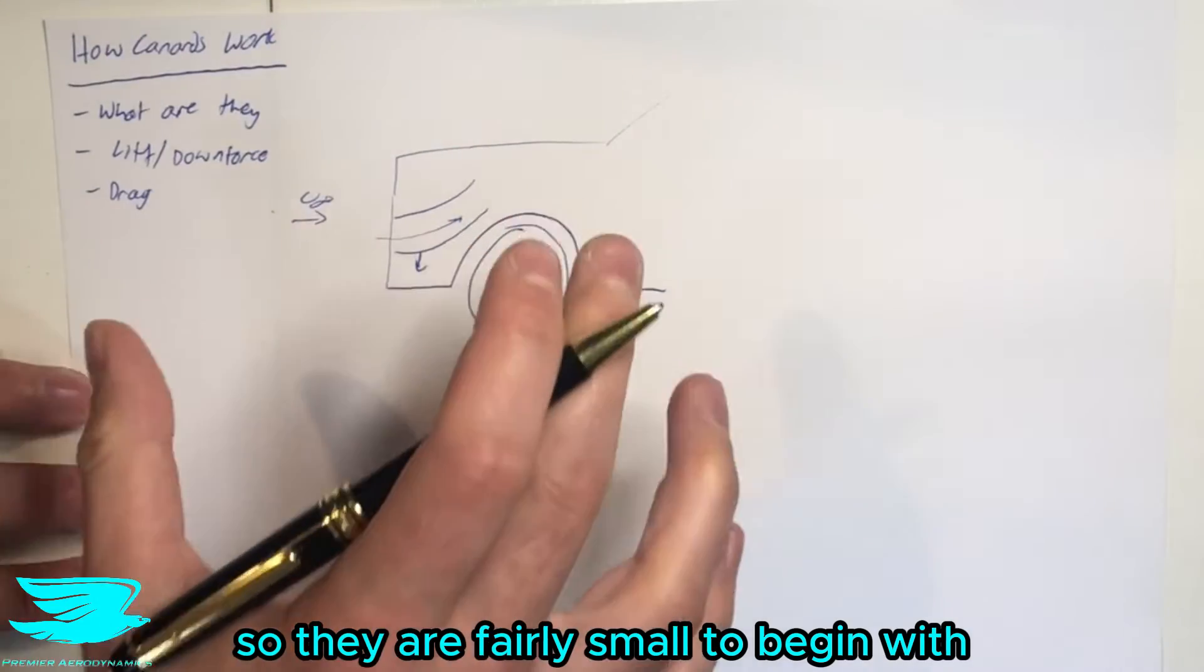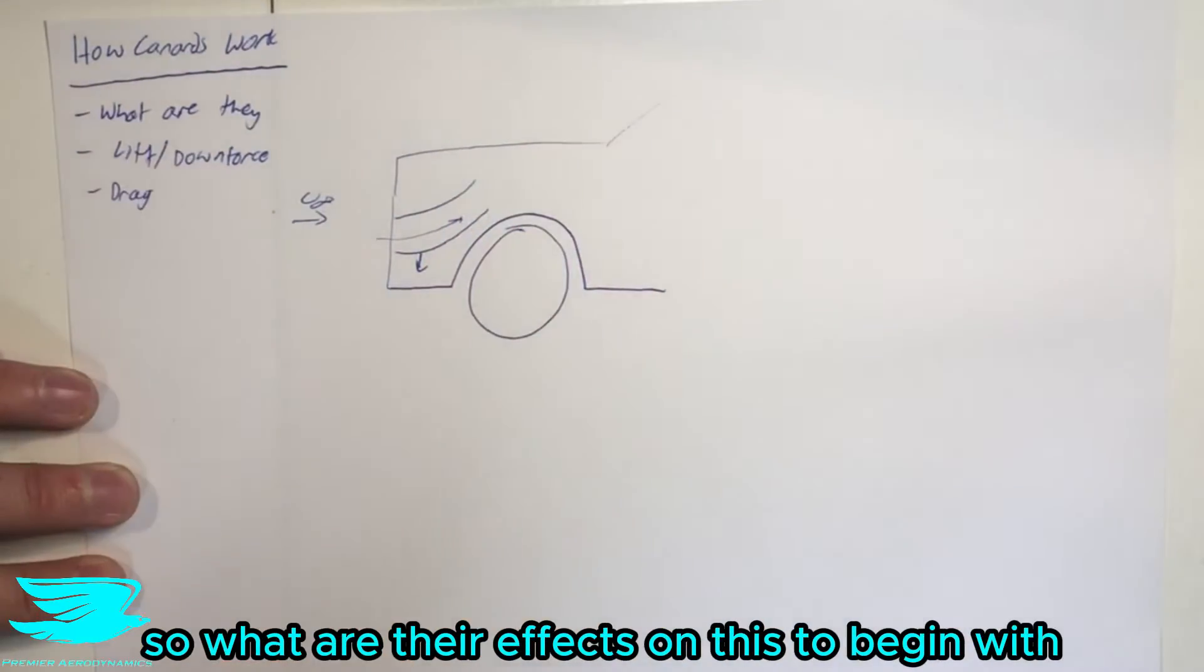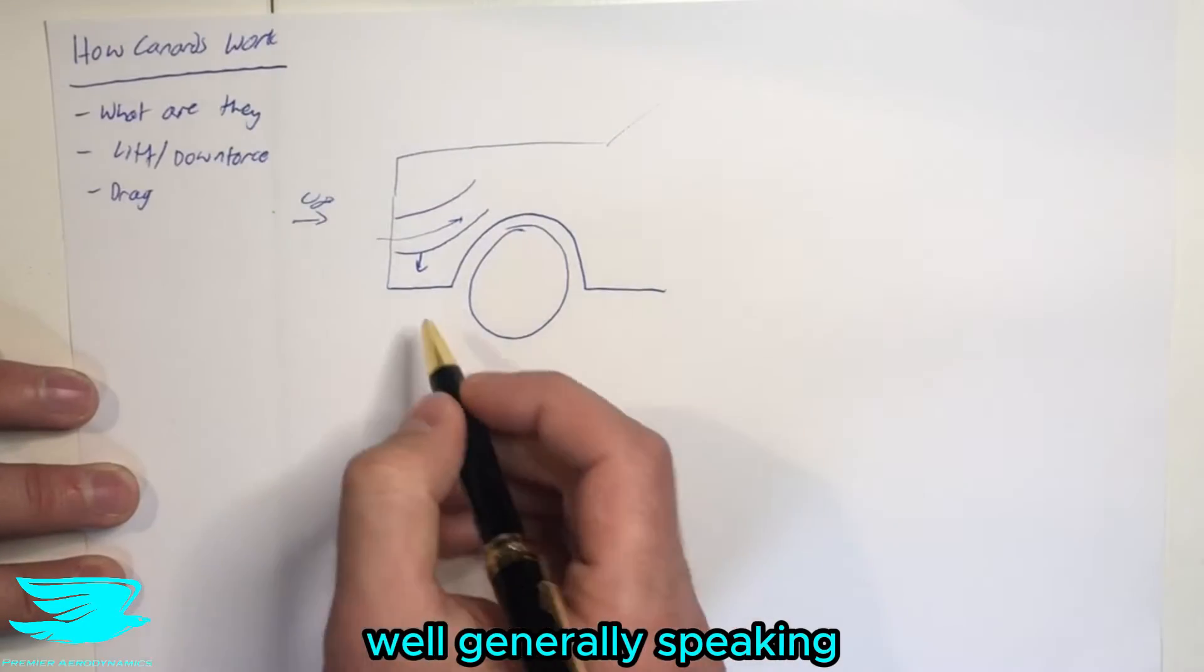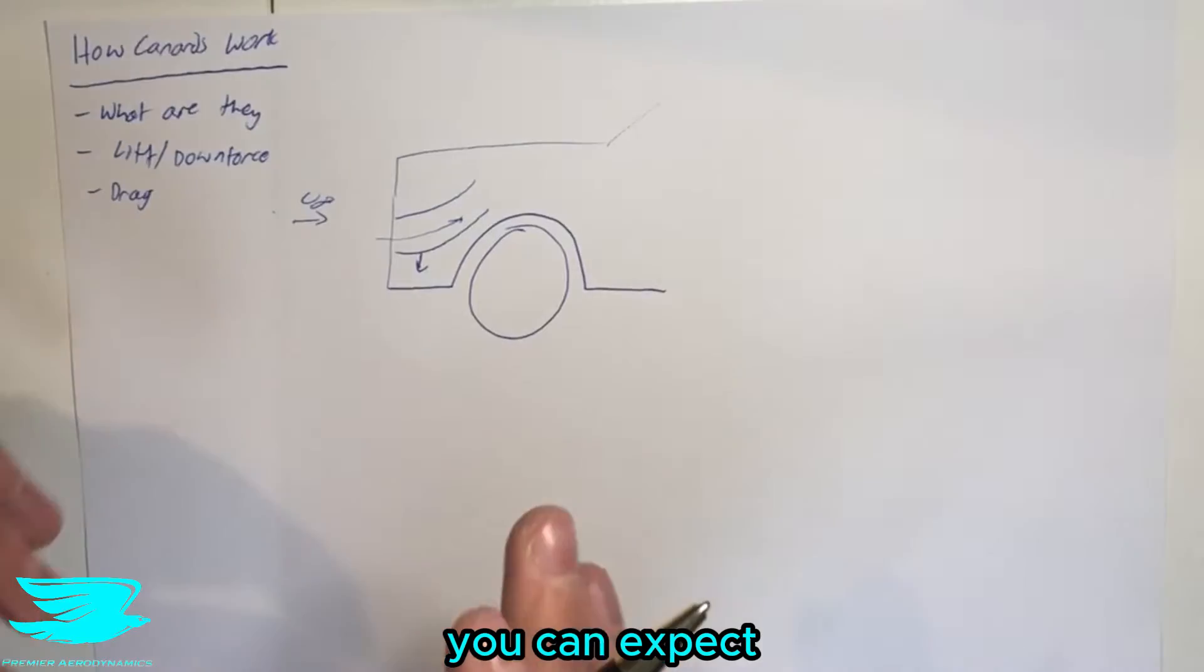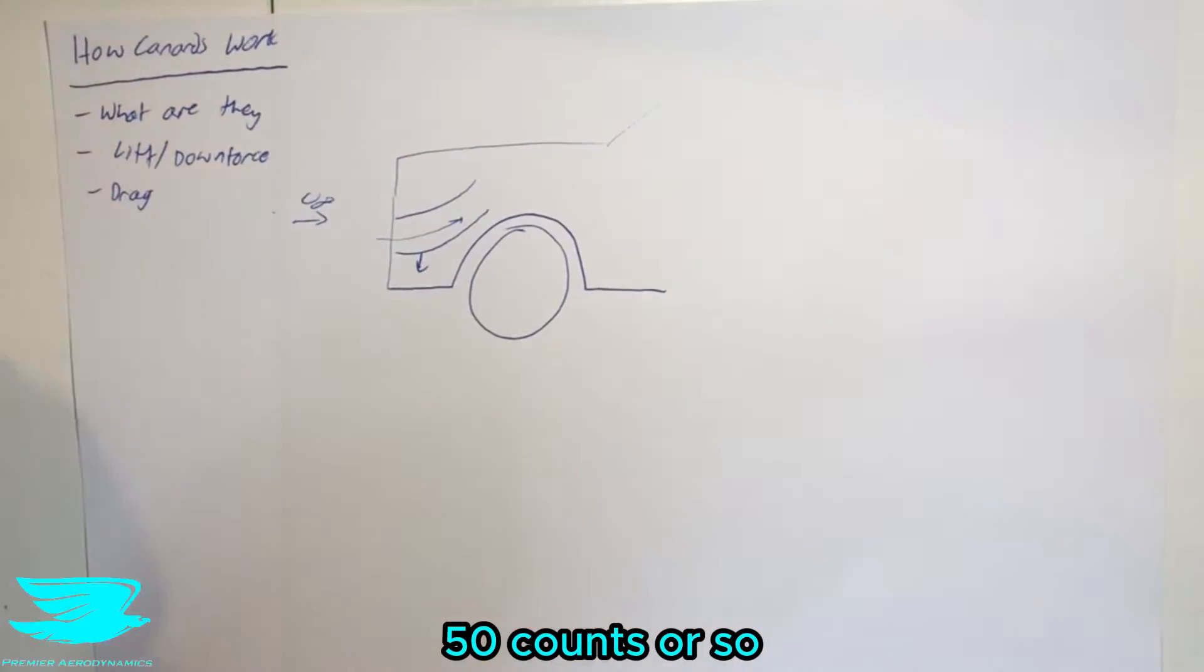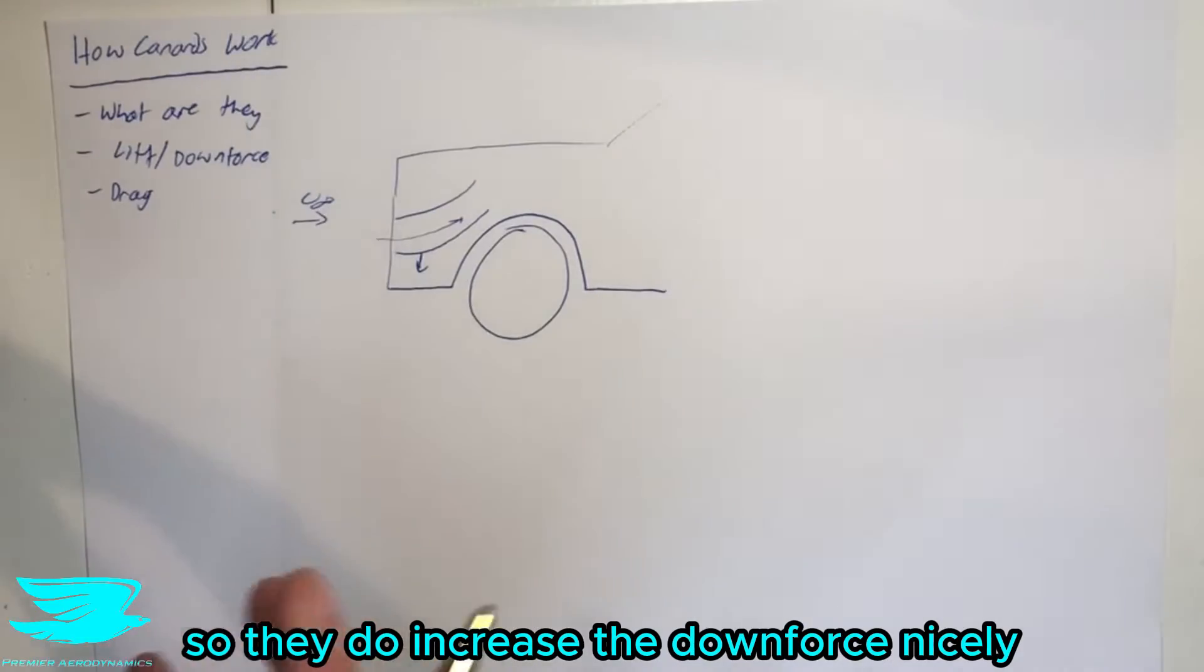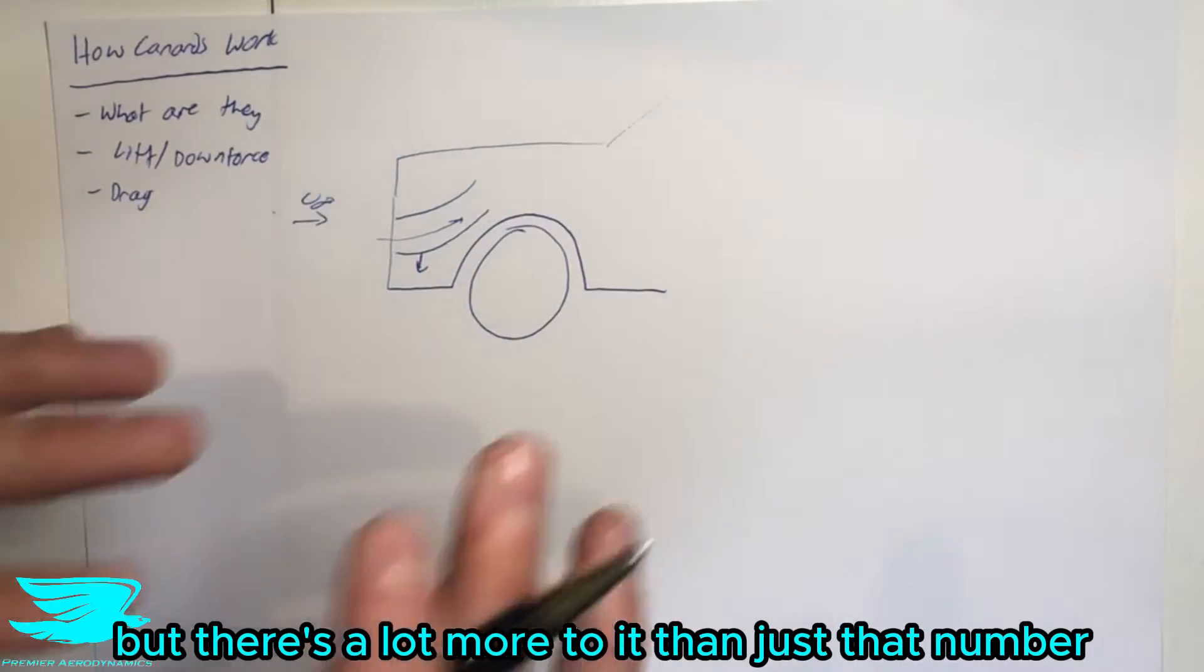So they are fairly small to begin with, and their positioning is quite interesting. So what are their effects on lift? Well, generally speaking, with these canards, you can expect an increase in downforce coefficient of about 20 to 40 counts, 50 counts or so. So they do increase the downforce nicely, but there's a lot more to it than just that number.